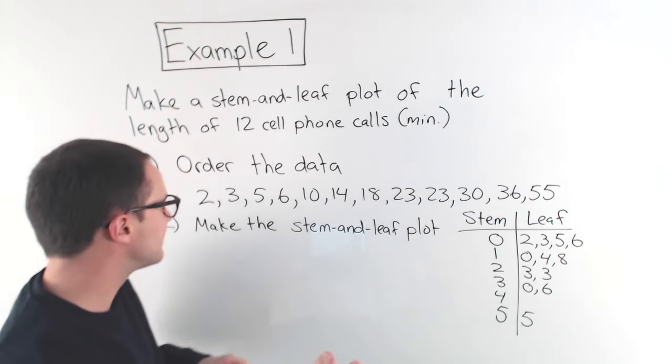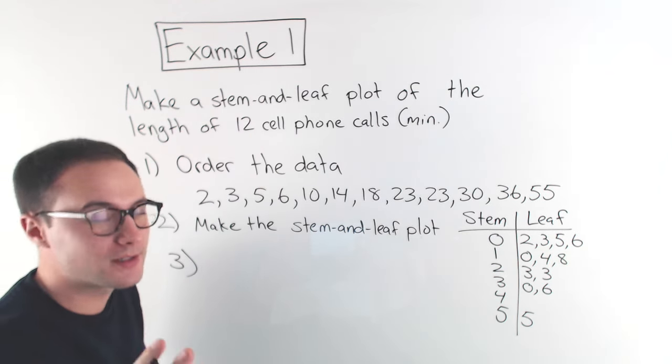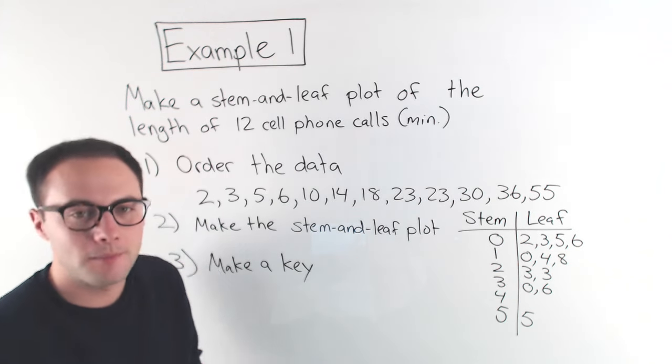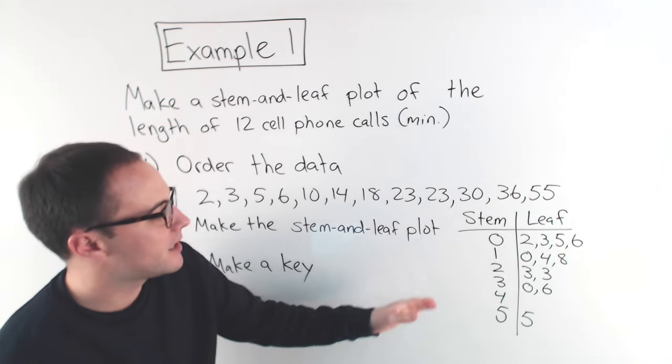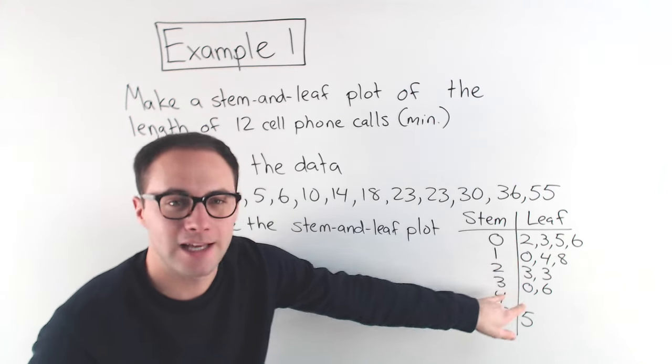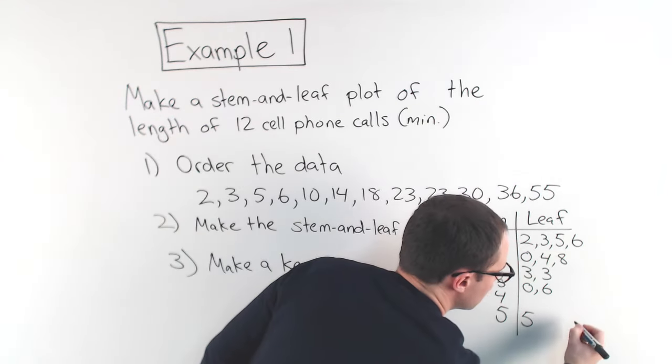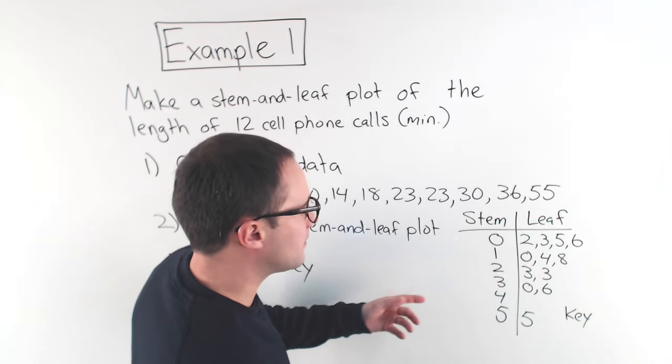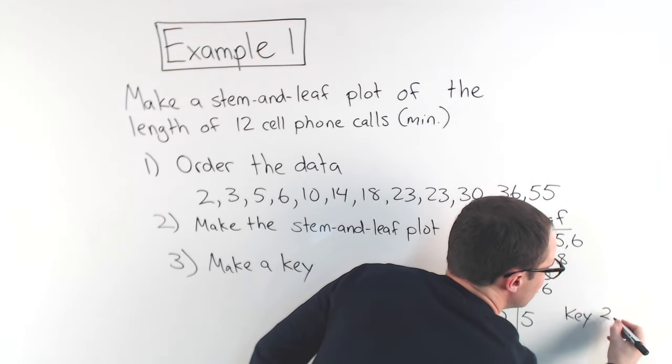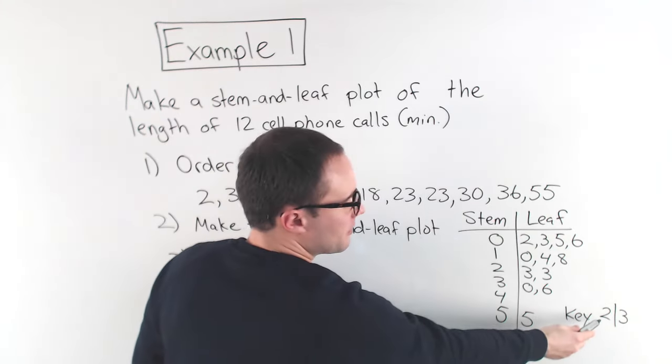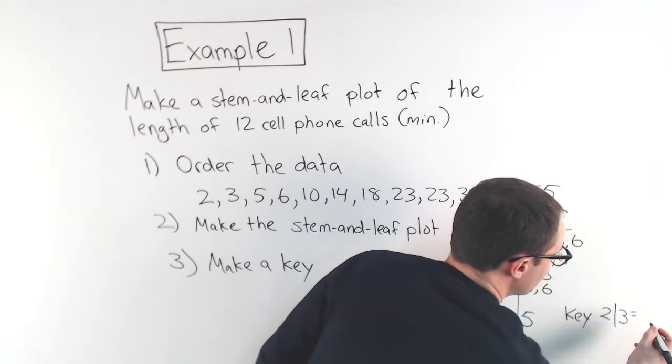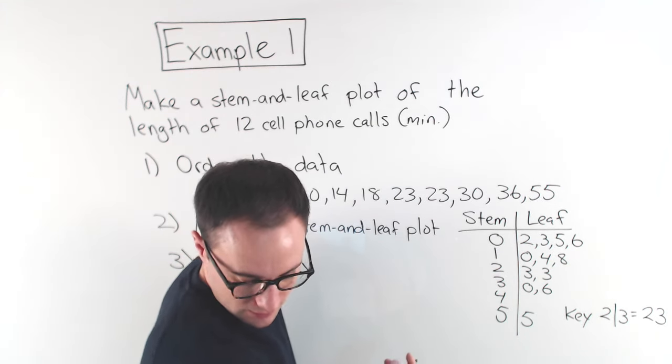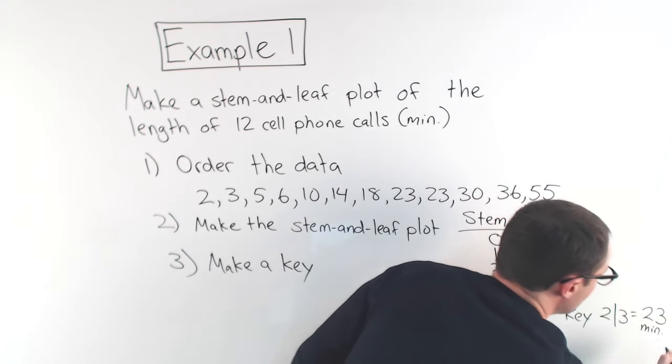We're almost done. Now, step 3, really important not to forget this, is to make a key. And the key is really important. Basically, all you do is you pick any example here for any value. I'm going to put the key over here.